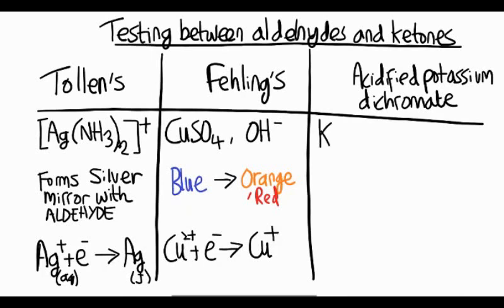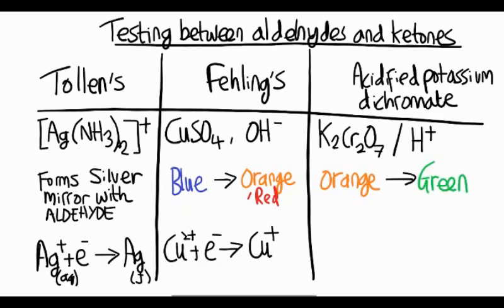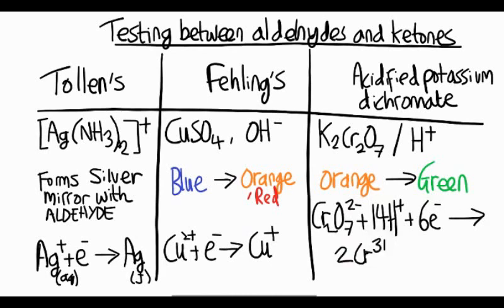How about acidified potassium dichromate? You may have come across this when you looked at the oxidation of primary, secondary, and tertiary alcohols. When it acts as an oxidizing reagent, it turns from orange to green because it's reduced, and the reduction reaction happens to the chromium in the presence of H plus ions. It's reduced to chromium 3 plus ions, and that accounts for that orange to green color change. It's quite a complicated equation, but there it is.